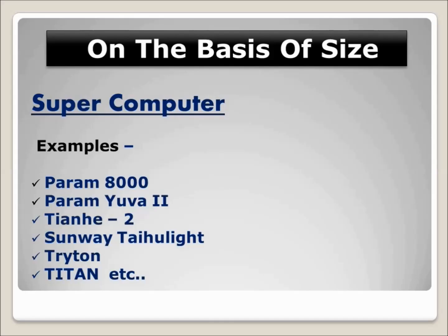Supercomputers are large in size, the fastest, and the most expensive computers when compared to mainframe computers, minicomputers, and microcomputers. Their processing speed is extremely fast, and they perform tasks at thousands of times faster than ordinary computers.